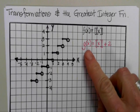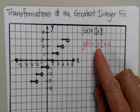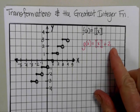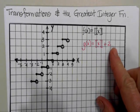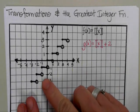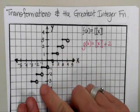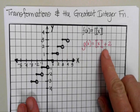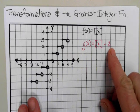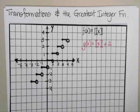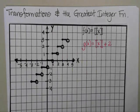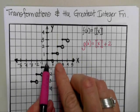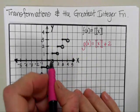I'm going to graph g of x is going to be the greatest integer of x plus 2. So how that's going to affect this greatest integer function is because I'm adding 2 outside the greatest integer, it's going to take this whole graph and shift it up two units.